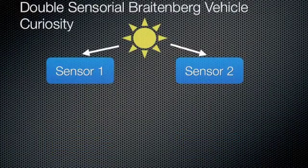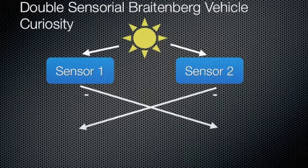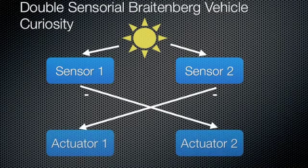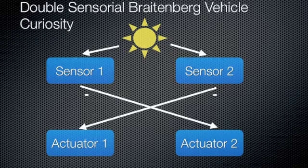The next vehicle is the curiosity vehicle. The difference to the love vehicle is that now sensor 1 controls actuator 2 and sensor 2 controls actuator 1.